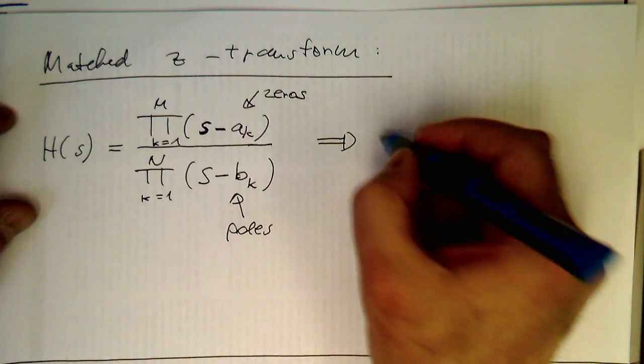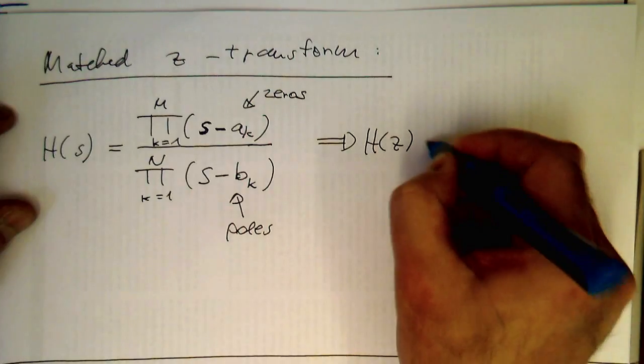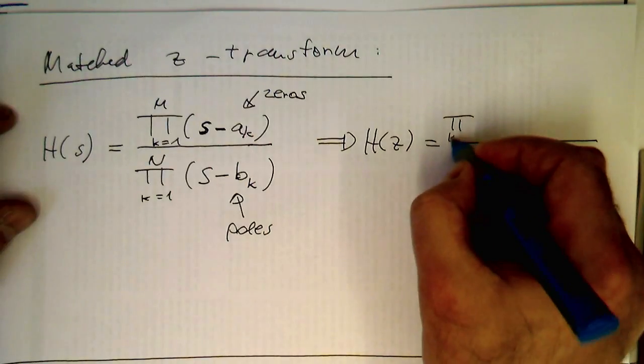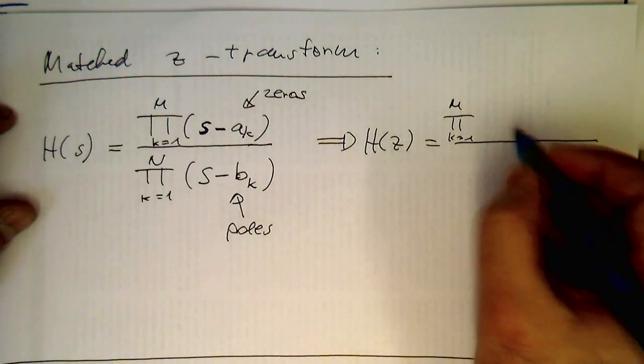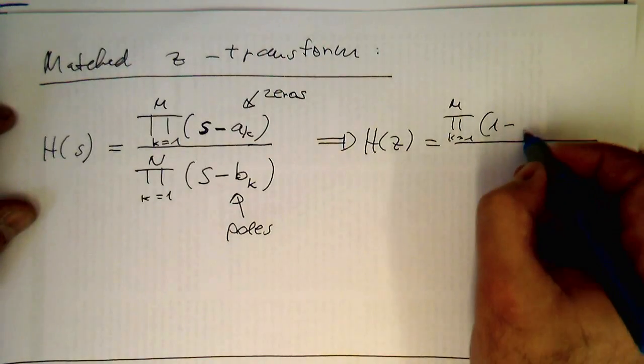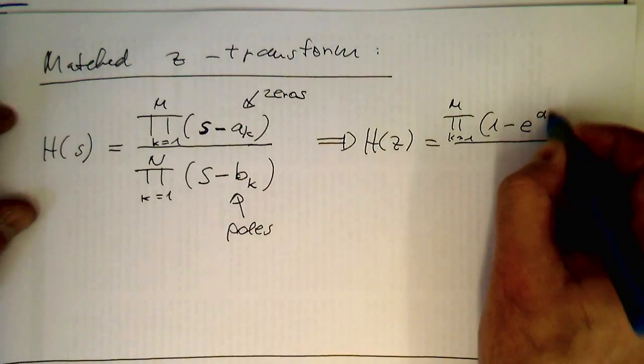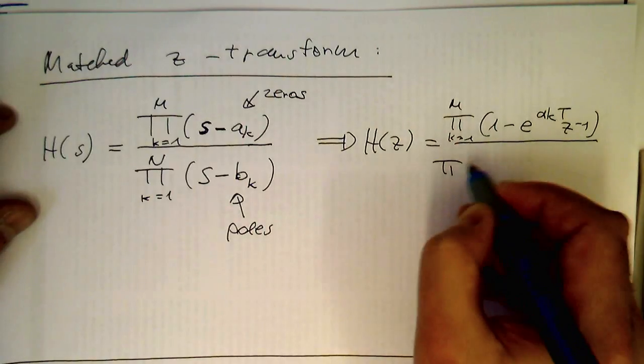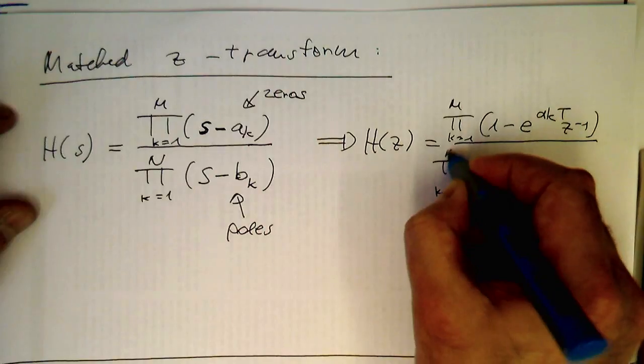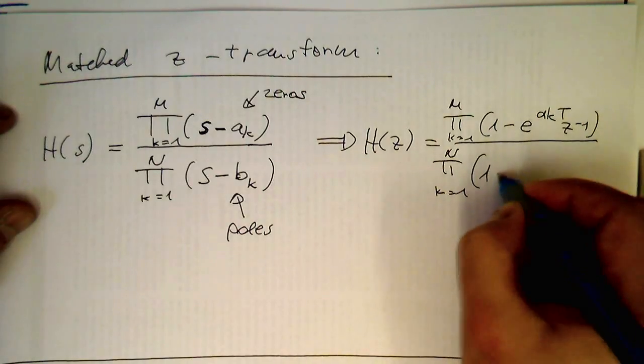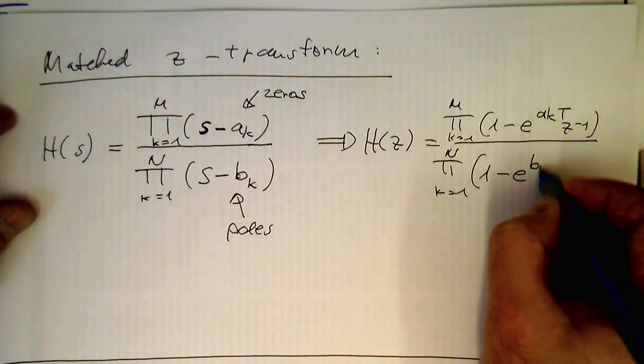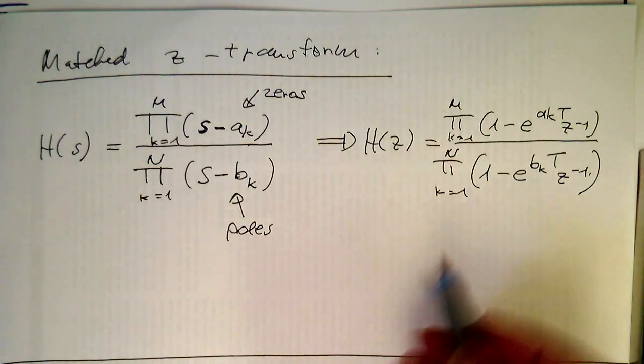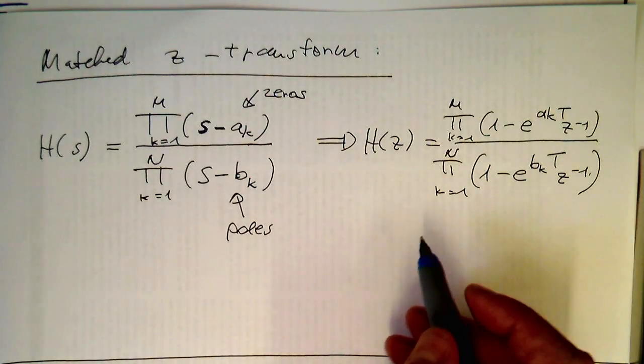And we just do a transform which is essentially one-to-one, so that we turn this into product K equals one to M: (1 minus e to the a_k T z to the minus 1). And then the product from one to N: (1 minus e to the b_k T z to the minus 1).